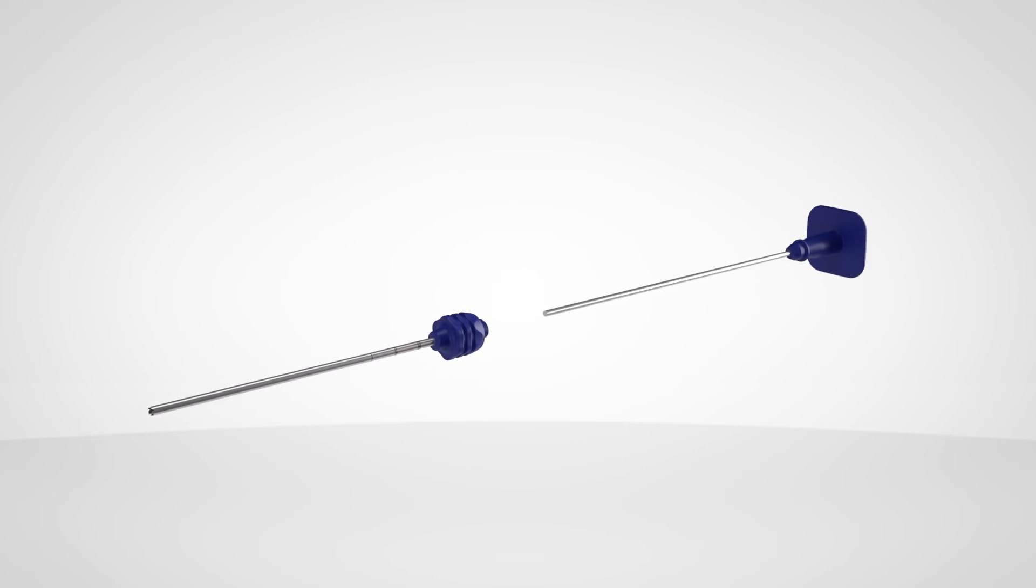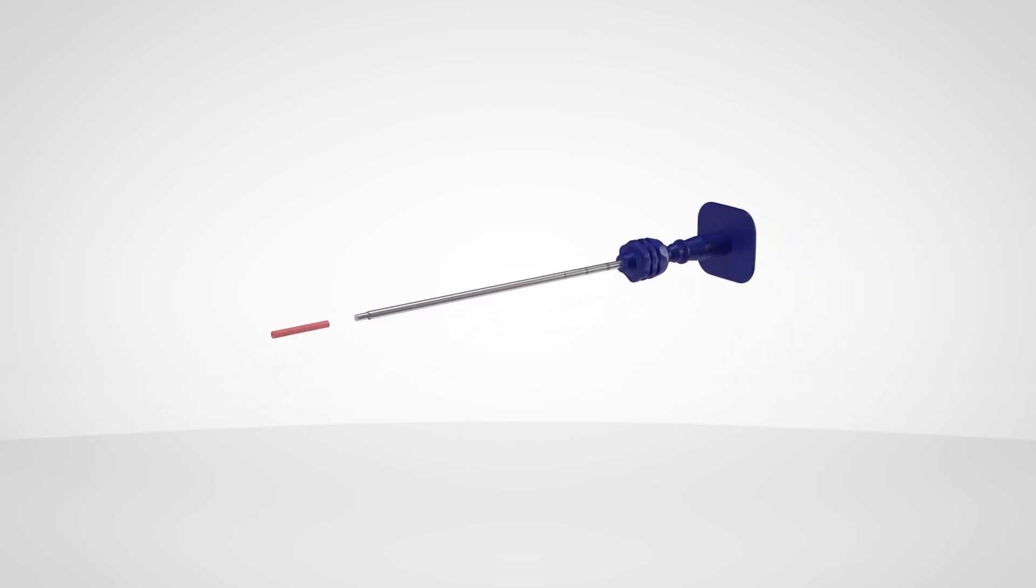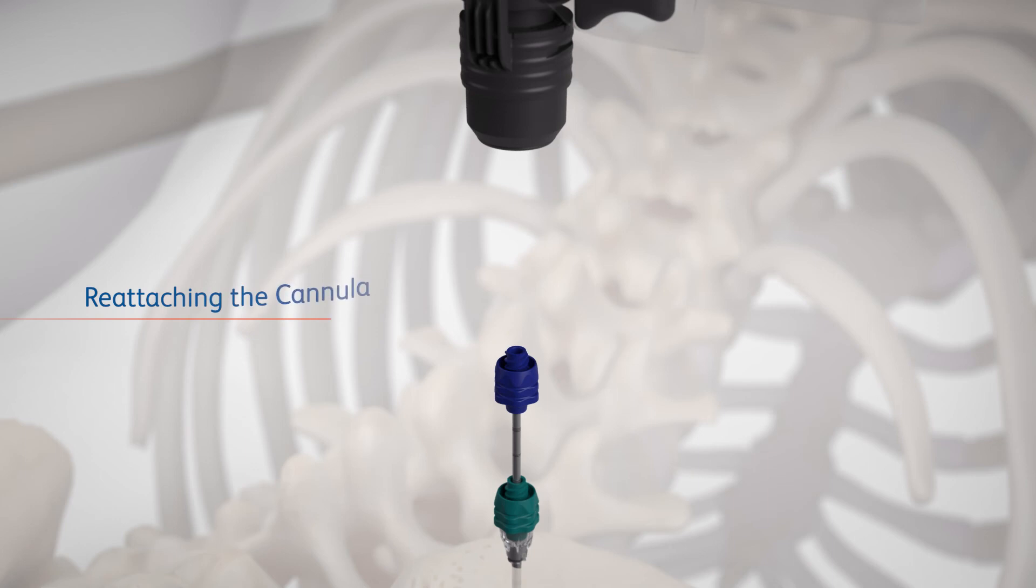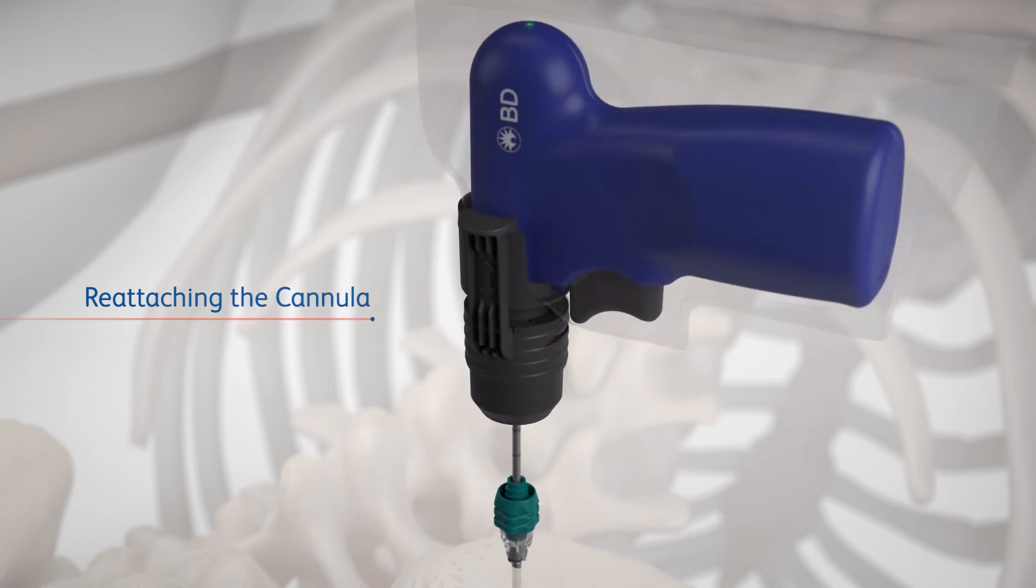To eject the biopsy sample, insert the ejector rod through the biopsy cannula hub. That will allow the sample to be ejected from the biopsy cannula tip. If desired, the biopsy cannula can be reattached and used to take additional samples.